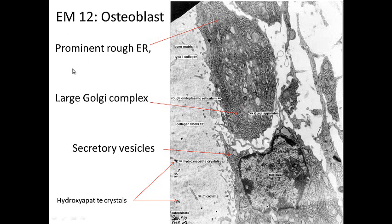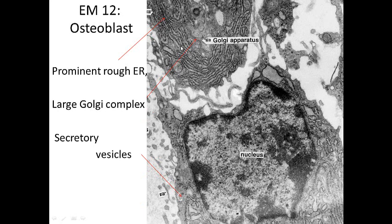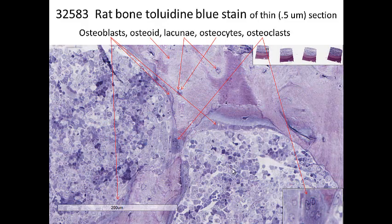At the electron microscopic level, the osteoblast shows extensive rough endoplasmic reticulum, indicative of protein production — type 1 collagen is the main component of bone. There is also hydroxyapatite, which crystallizes bone and makes it hard. Secretory vesicles secrete the type 1 collagen, and a large Golgi apparatus adds sulfate groups to the proteins produced in the rough ER to make collagen. So: rough endoplasmic reticulum, Golgi apparatus, secretory vesicles, and nucleus are the key features of osteoblasts.